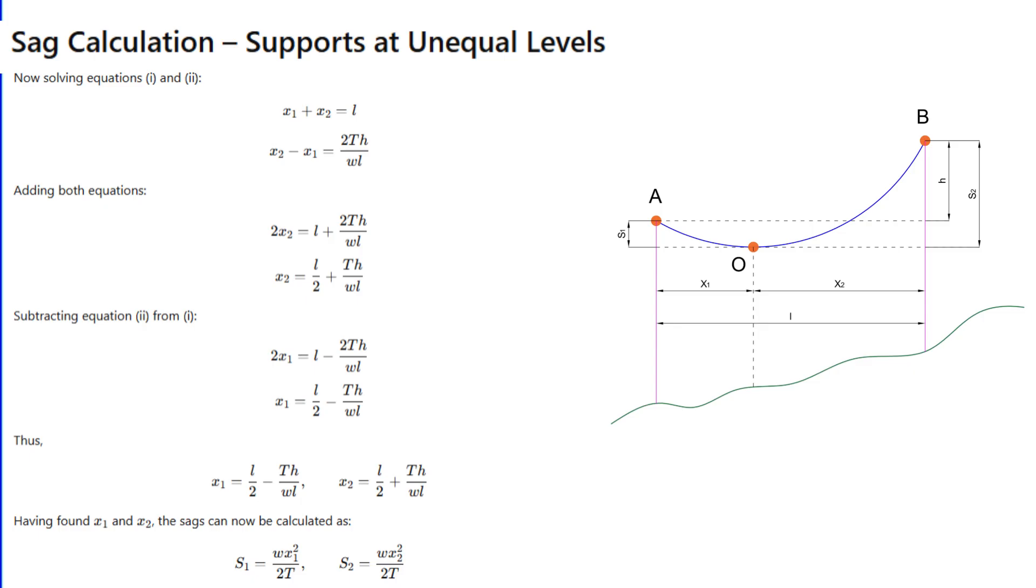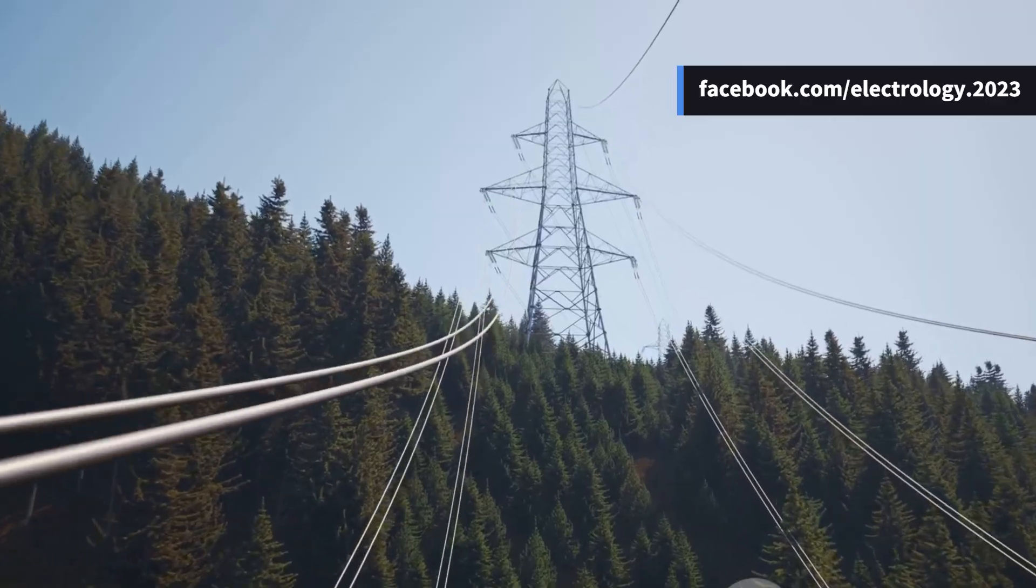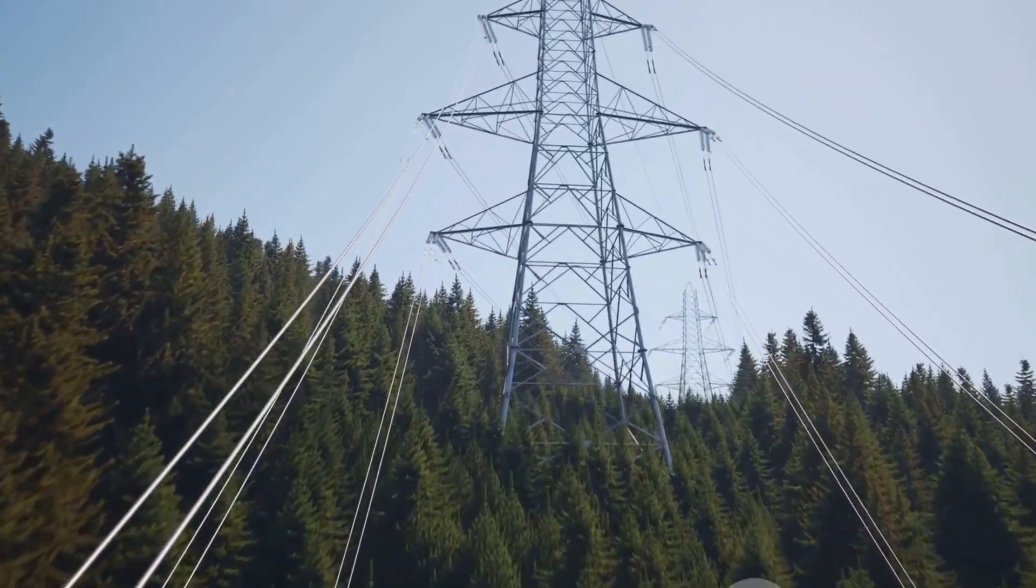Once we know x₁ and x₂, we can easily get s₁ and s₂. Pretty cool, right? So next time you see a transmission line over hills, just remember there's math behind that sag.